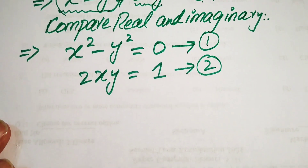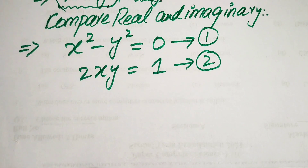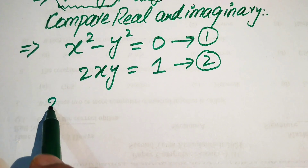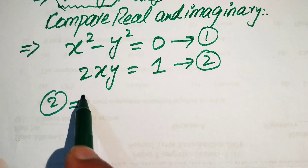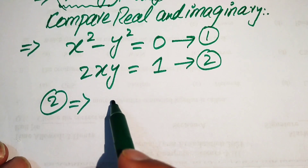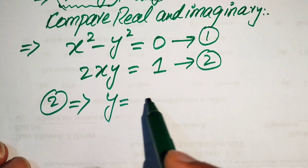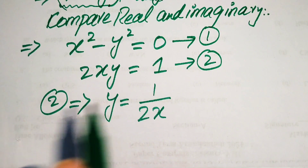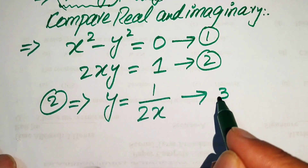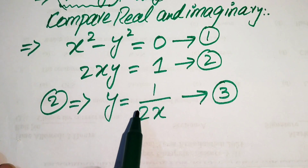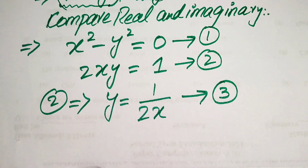Our target is to find the values of x and y. Focusing on Equation 2 first, we move 2x to the right-hand side and get y equals 1 over 2x. We call this Equation 3.